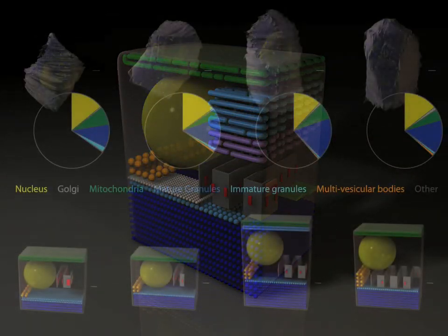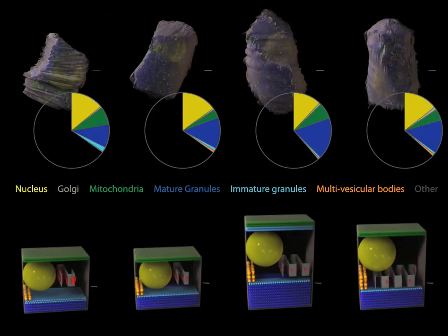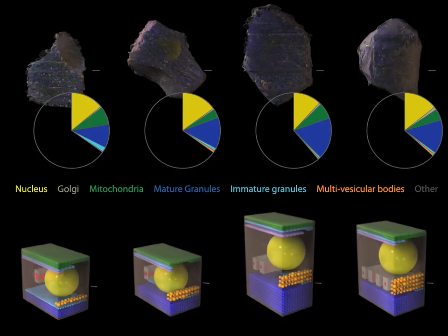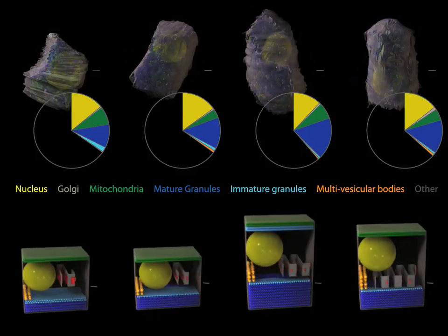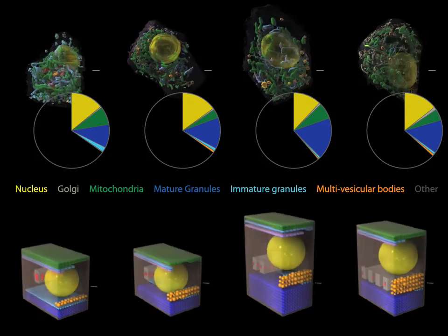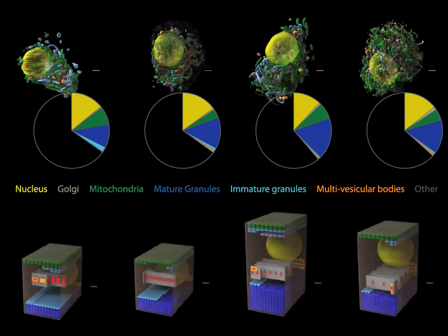The same tool enables us to rapidly compare otherwise similar-looking cells. The two cells on the left, collected after glucose stimulation, are smaller and have a different organelle distribution than the two unstimulated cells on the right.